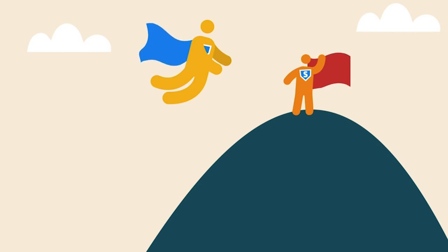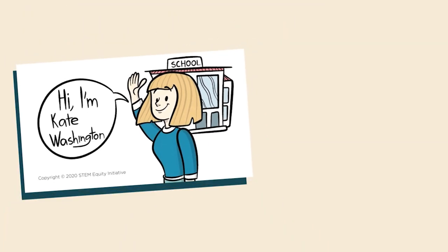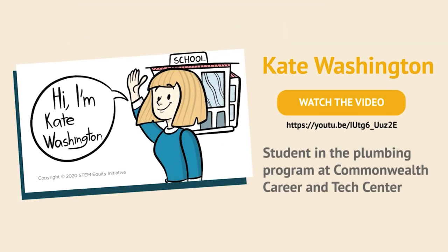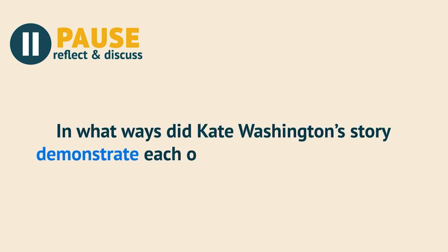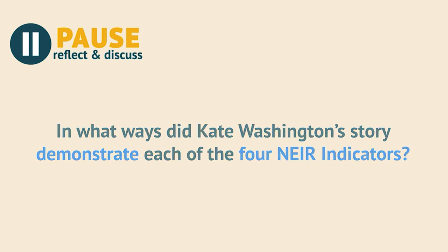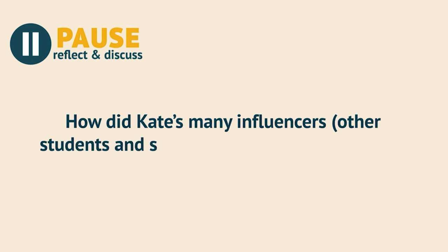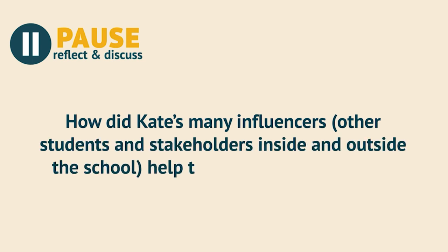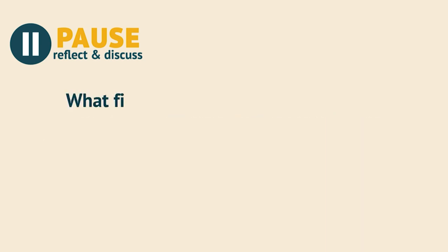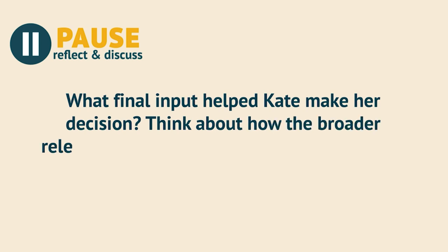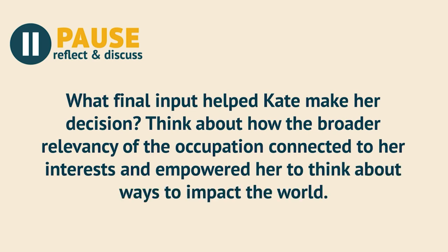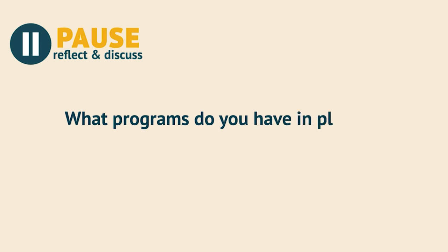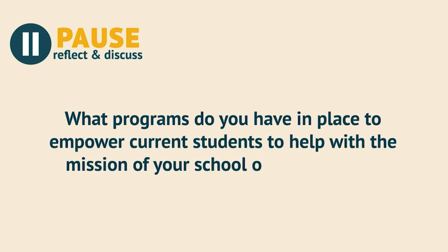Empowering students by supporting a positive mindset related to their assets builds resilience when they face academic, social, and personal challenges. To demonstrate the empower indicator, let me introduce Kate Washington, a student in the plumbing program at Commonwealth Career and Tech Center. Listen carefully to her story. Pause and reflect: In what ways did Kate Washington's story demonstrate each of the four NEAR indicators? How did Kate's many influencers — other students and stakeholders inside and outside the school — help to build her self-efficacy? What final input helped Kate make her decision? Think about how the broader relevancy of the occupation connected to her interests and empowered her to think about ways to impact the world.